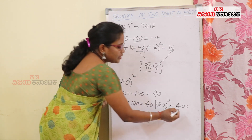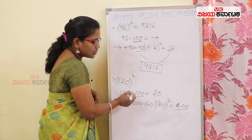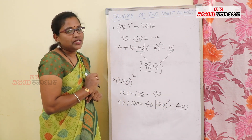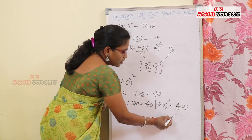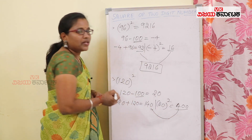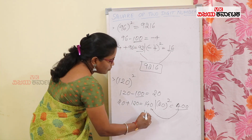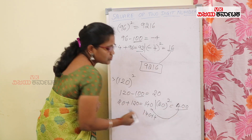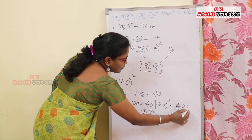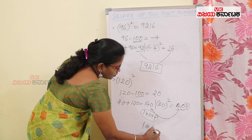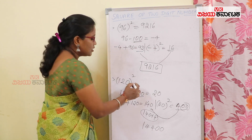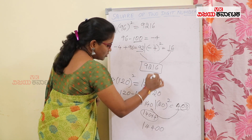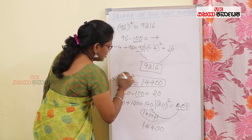Now let's observe here. There are 3 digits. The base is 100. So let's add 2 digits and 3 digits. Adding 140 plus 4, with 100 having 2 zeros. So it is 14400. And 120 squared is 14400.